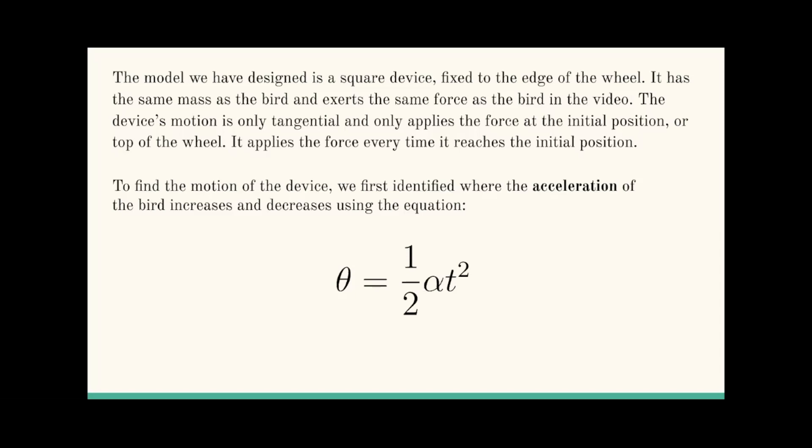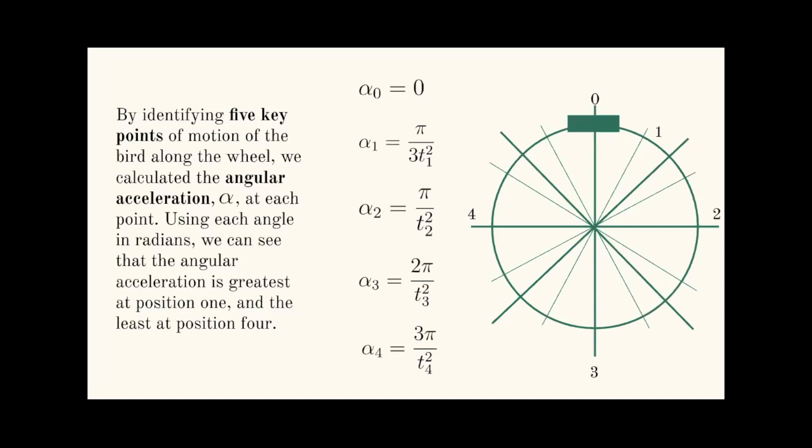To find the motion of the device, we first identify where the acceleration of the bird increases and decreases using the equation θ = 1/2 αt². By identifying five key points of motion of the bird along the wheel, we calculated the angular acceleration, α, at each point. We can see that the angular acceleration is greatest at position one and least at position four.